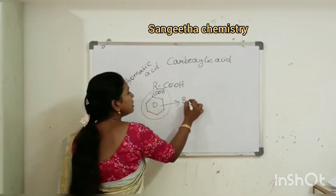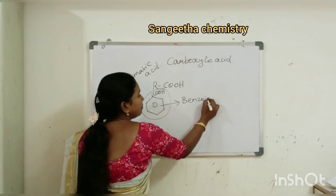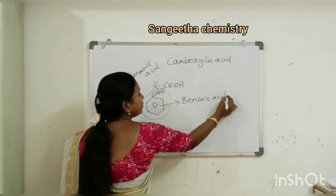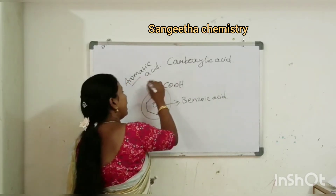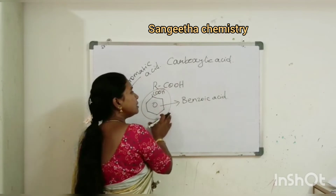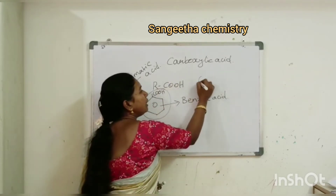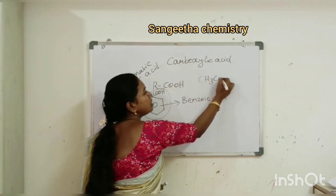A good example of aromatic acid is benzoic acid. Aryl groups give aromatic acids. In contrast, CH3-COOH uses an alkyl group, making it an aliphatic acid.